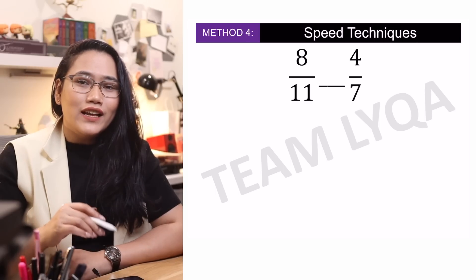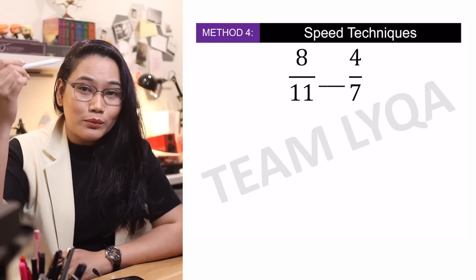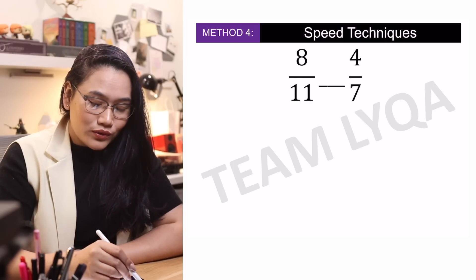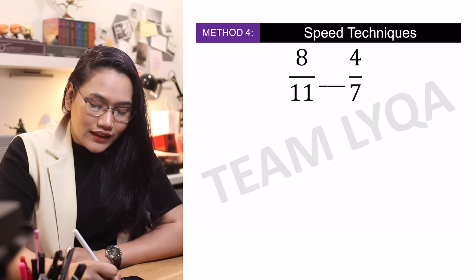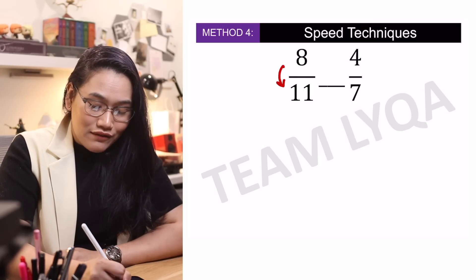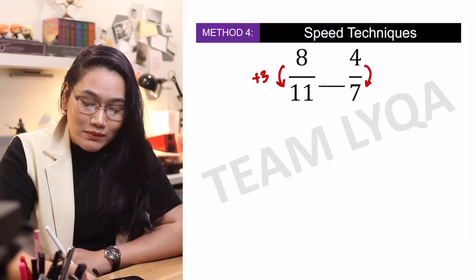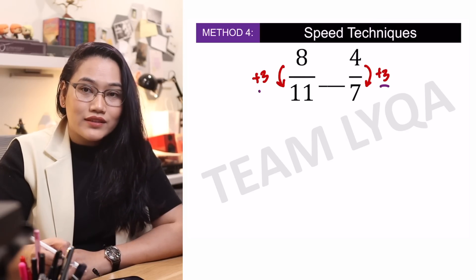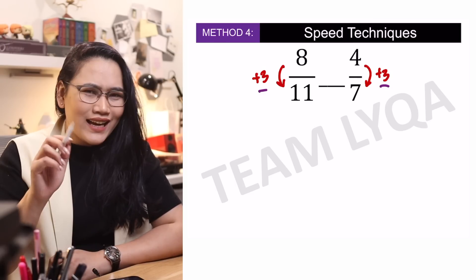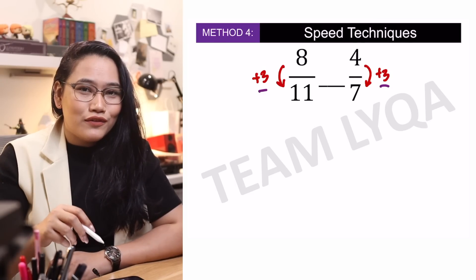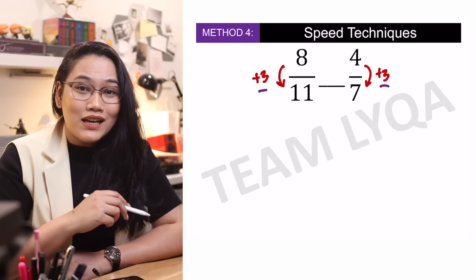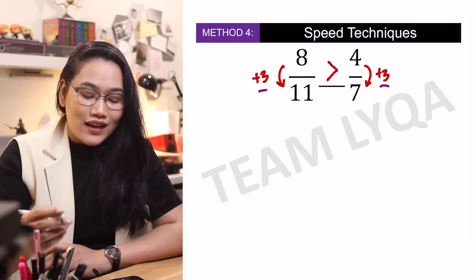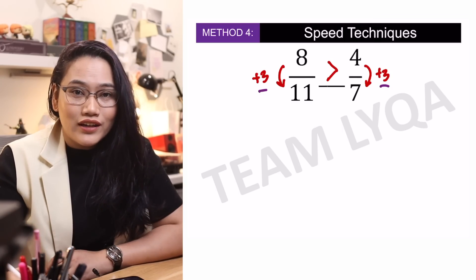Balikan natin yung tanong. 8 over 11 and 4 over 7 — hindi sila magkapareho ng numerator, hindi rin sila magkapareho ng denominator. Pero kung titignan mo, ang 8 at 11 — ang idadagdag mo sa 8 para maging 11 ay 3, at ang idadagdag mo rin sa 4 para maging 7 ay 3. Pareho sila ng difference: 7 minus 4 is 3, 11 minus 8 is 3. Kaya kung alam mo yung speed technique na kung pareho sila ng difference, mas malaki yung may mas malalaking numbers — isang tingin mo pa lang, alam mo na na ang tamang sagot ay greater than. 8 over 11 is greater than 4 over 7.